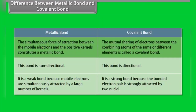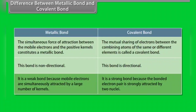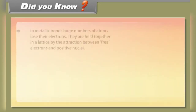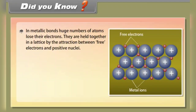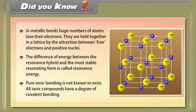The simultaneous force of attraction between mobile electrons and positive kernels constitutes a metallic bond, whereas the mutual sharing of electrons between combining atoms is called a covalent bond. Metallic bond is non-directional, whereas covalent bond is directional. Metallic bond is weak because mobile electrons are simultaneously attracted by a large number of kernels, whereas covalent bond is strong because the bonded electron pair is strongly attracted by two nuclei. In metallic bonds, a large number of atoms lose their electrons and are held together in a lattice by attraction between free electrons and positive nuclei. The difference in energy between the resonance hybrid and the most stable resonating form is called resonance energy. Pure ionic bonding is not known to exist — all ionic compounds have a degree of covalent bonding.